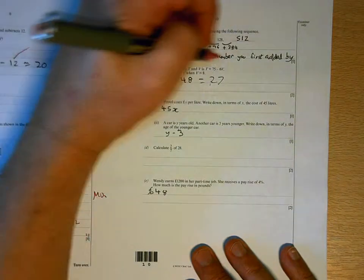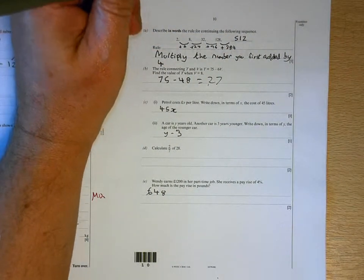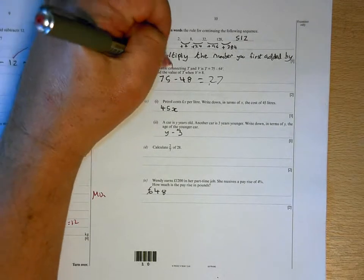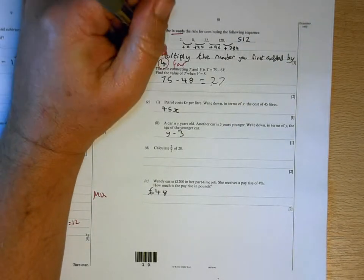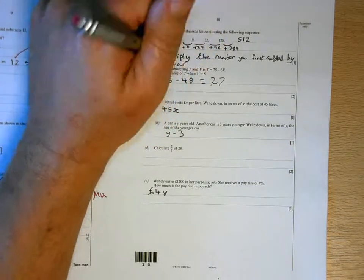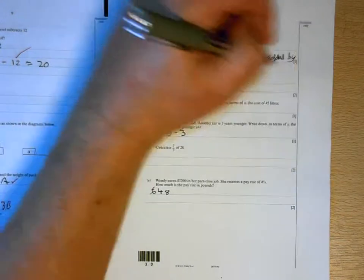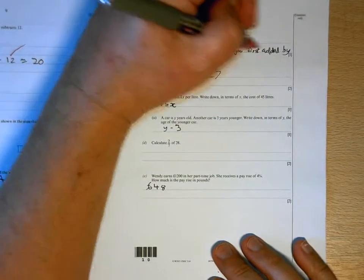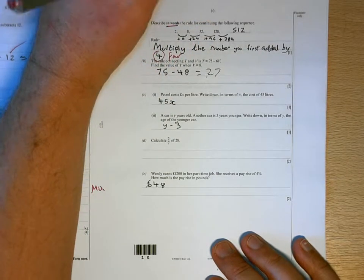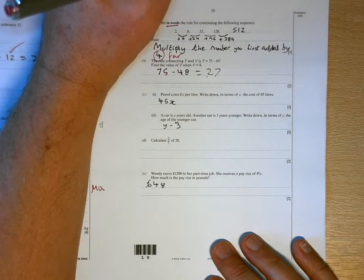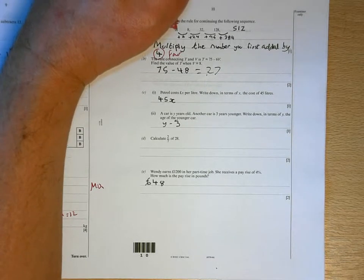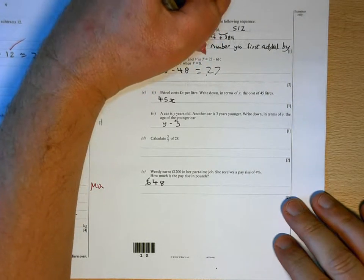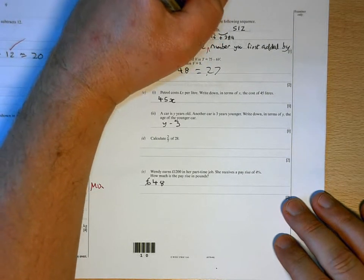Multiply the number you first added by four. Well again, you need to use the word you haven't, and you're not describing it correctly there. The number you first added by four. You're just multiplying every previous number by four.